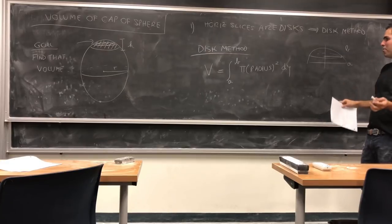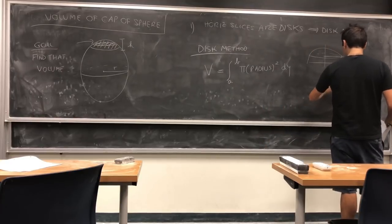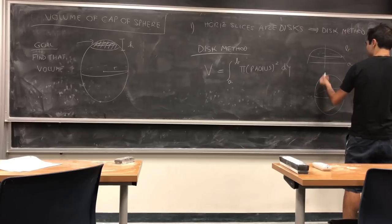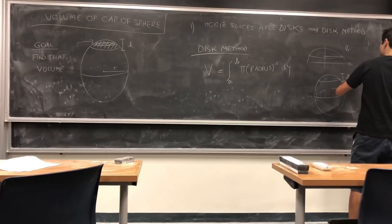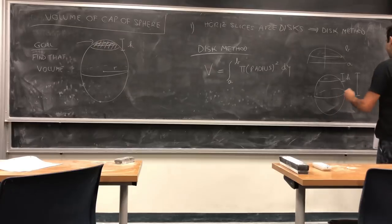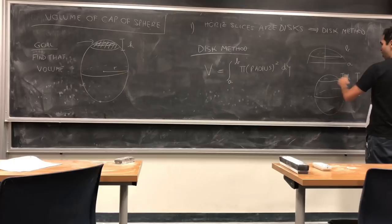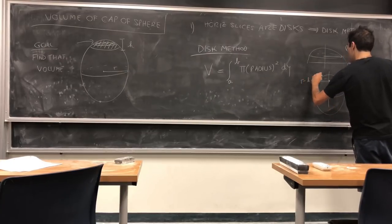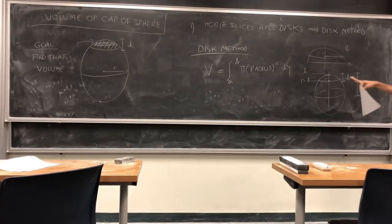And the question is, so a couple things: what is a and what is b? Well, again, notice that we have our cap that has height h, but also our ball has radius r. So really what you're starting with is r minus h. This is r minus h, and what you're ending with is r.